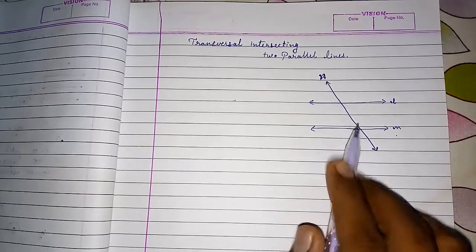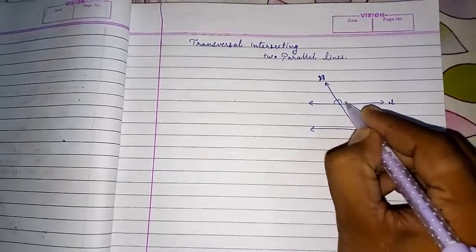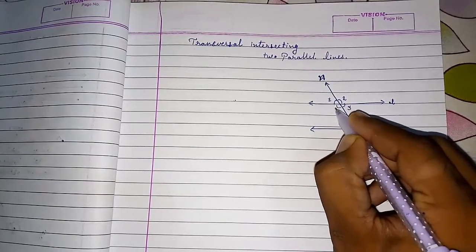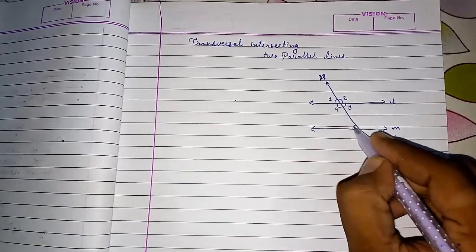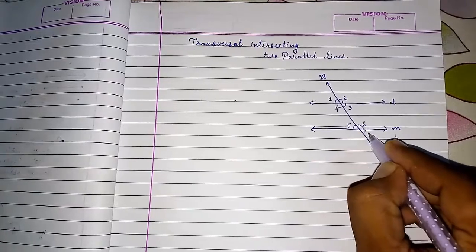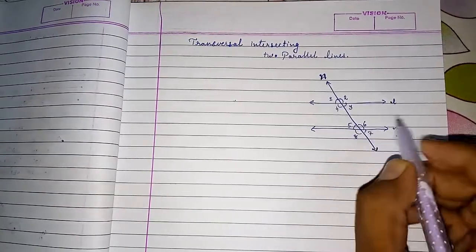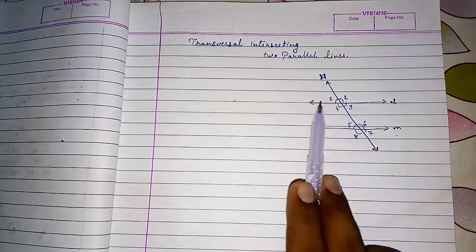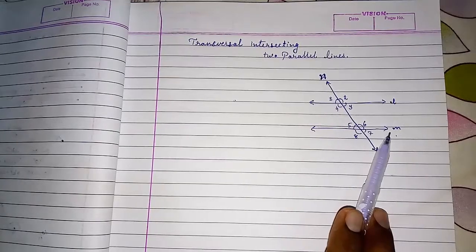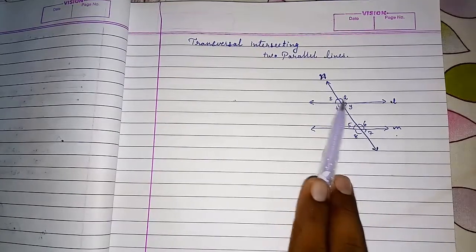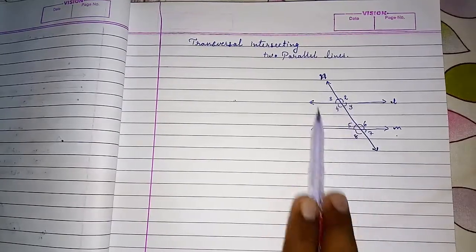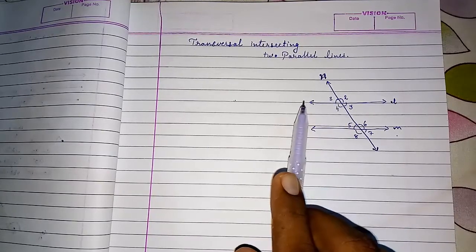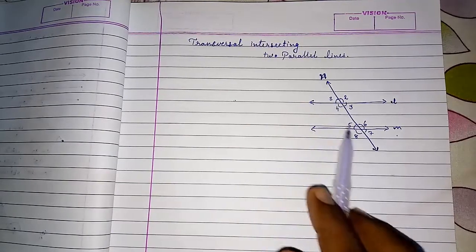We can see four angles on the upper part and four on the lower part. I am giving names to the angles: one, two, three, four, five, six, seven, and eight. Eight angles are formed when a transversal intersects two parallel lines. There are a few relationships between these angles.